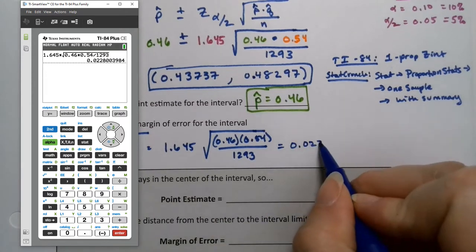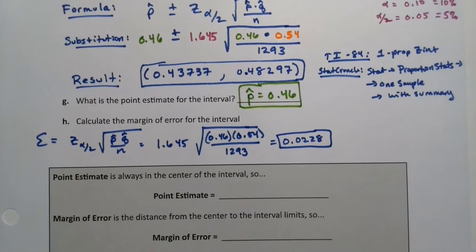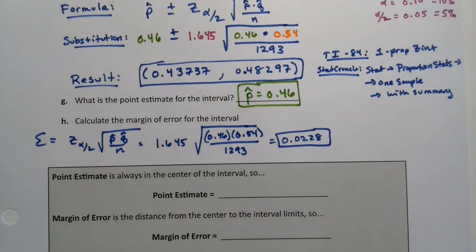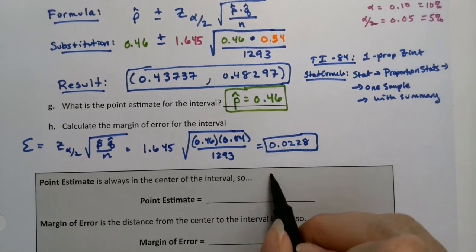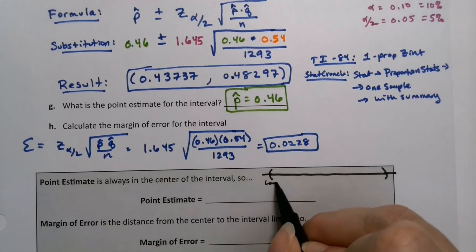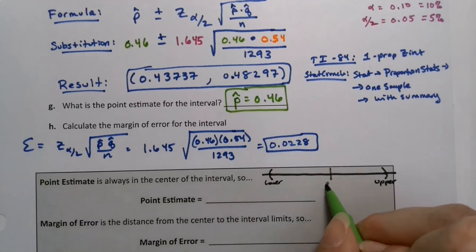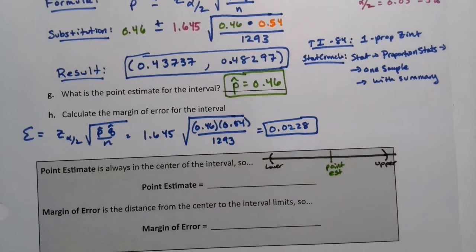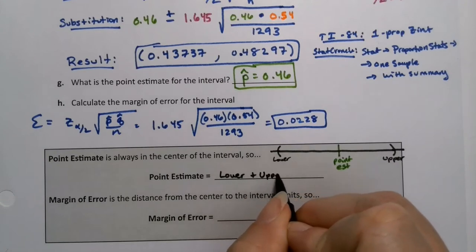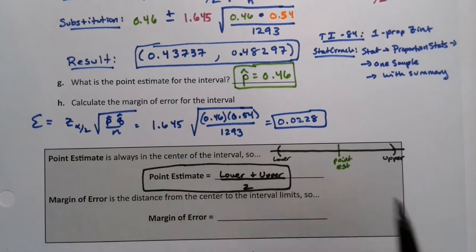Now there's another way to find this. Remember that the point estimate is always the center of the interval, and the error is the distance from the edge to the center. Let me draw a picture. If you have your interval going from your lower number to your upper number, your point estimate is in the exact middle. Well, if I just took the lower number and added the upper number and divided by 2, that would get me that point estimate.